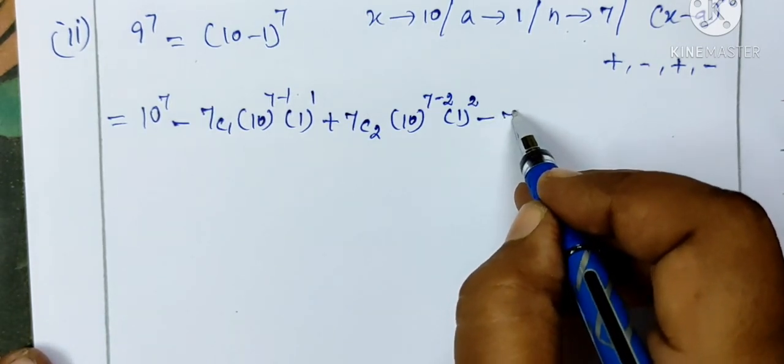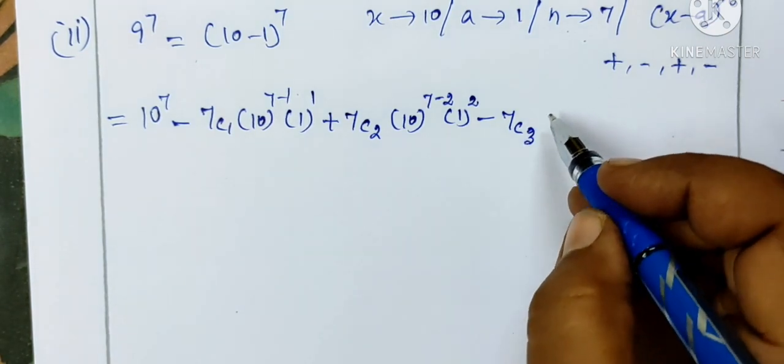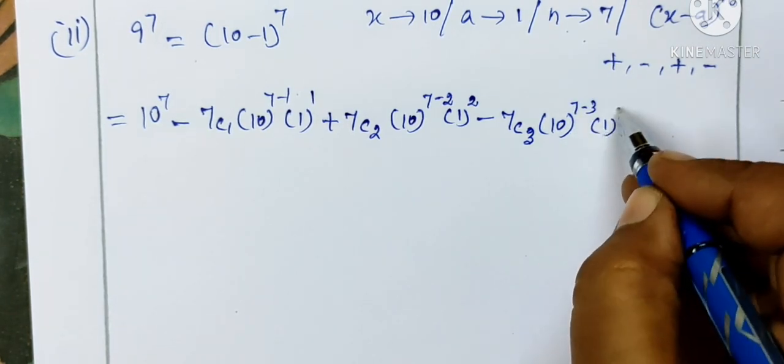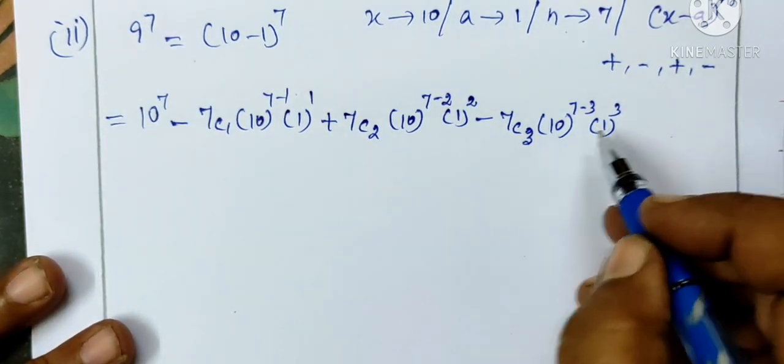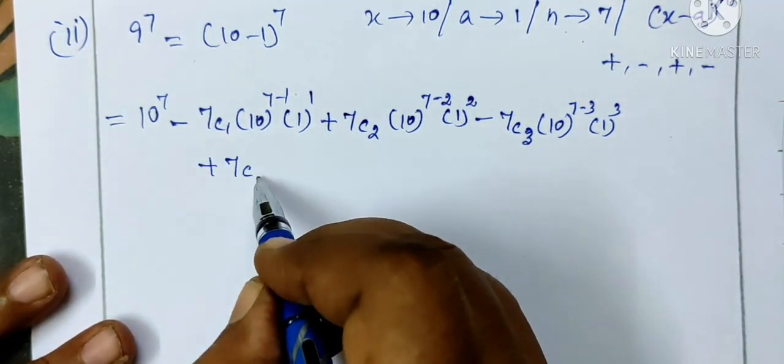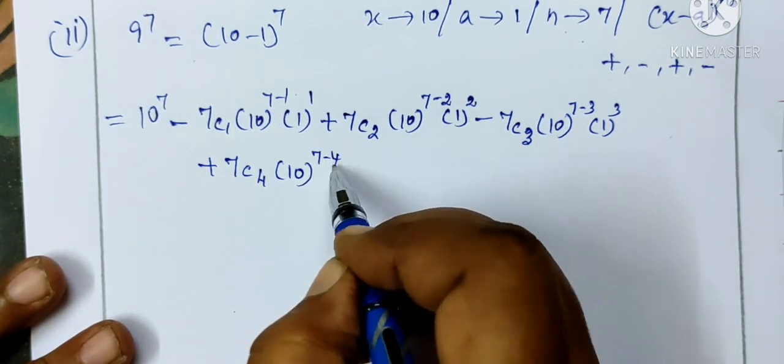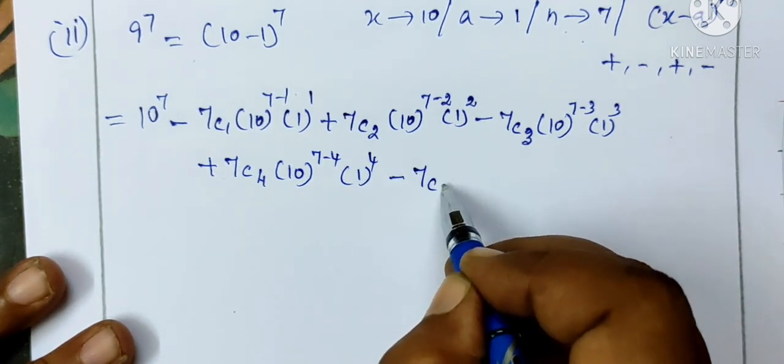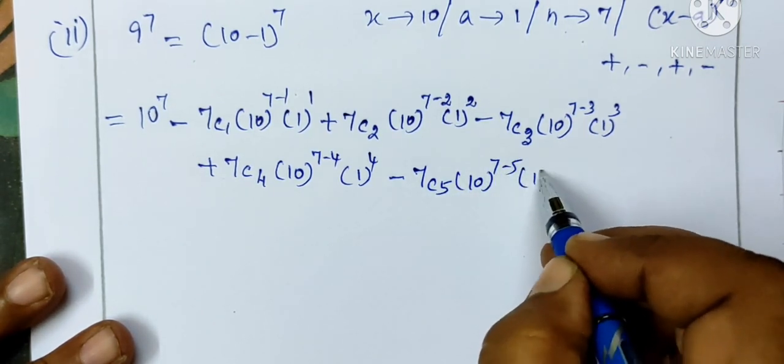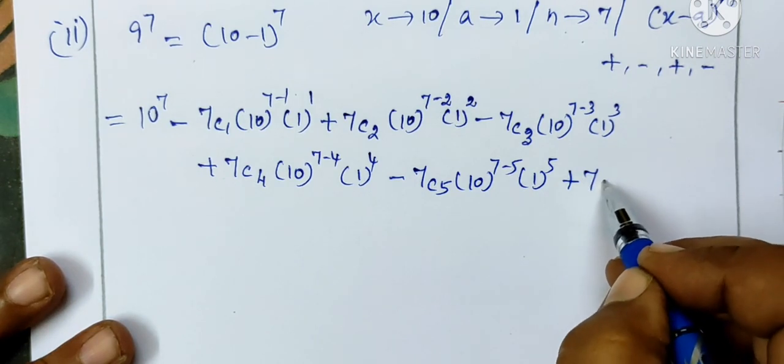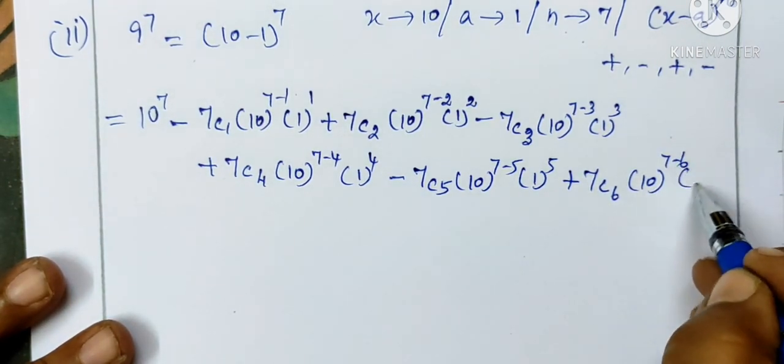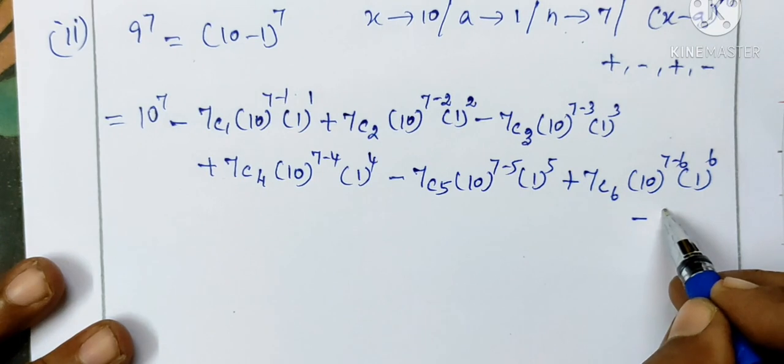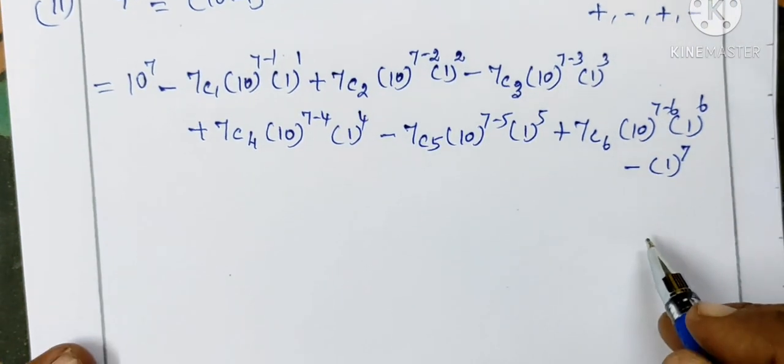Then nC3, plus nC3, then x power n minus 3 then a power 3. So plus nC4 x power n minus 4 then a power 4. Then nC3, minus 7C5, 10 power 7 minus 5 a power 5. Then nC3 plus nC6, 10 power 7 minus 6, then 1 power 6. Last power n, 7C7, then a power n, power 7 minus a power 7.